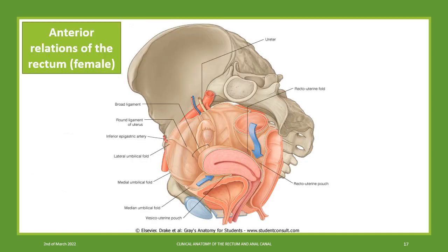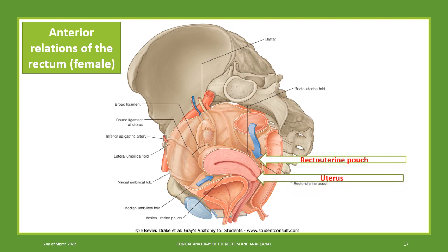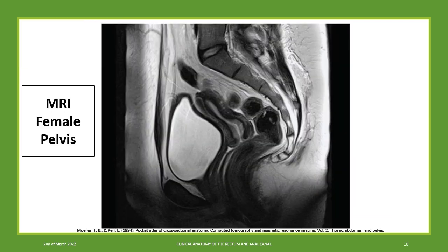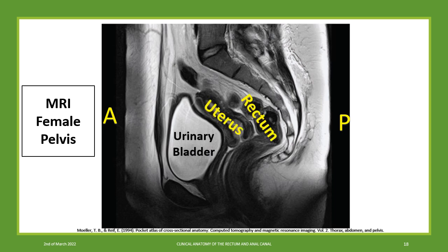The anterior relations of the female rectum are the recto-uterine pouch, the uterus, and the vagina. In this sagittal MRI, we can see anteriorly and posteriorly the same structures: urinary bladder, uterus, and the rectum.